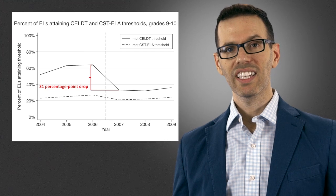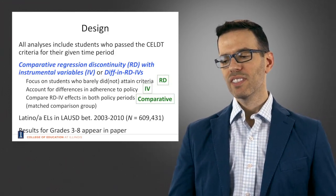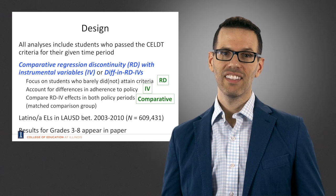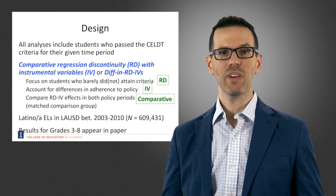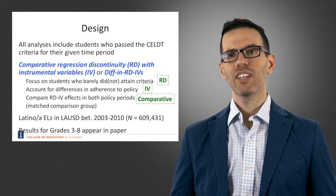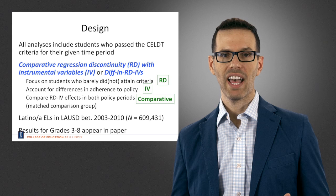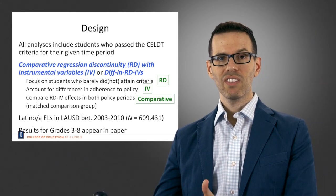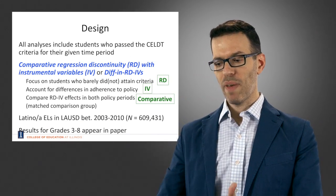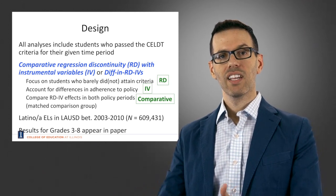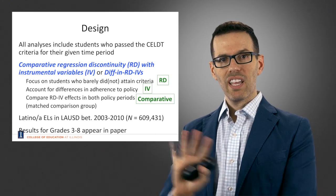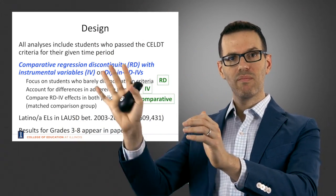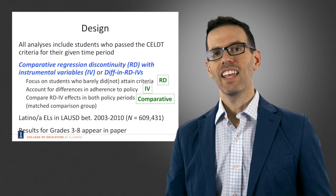So they did make the test harder. Now we want to see whether making the test harder had an effect on subsequent outcomes such as academic performance and graduation likelihood. To study that, we will limit all analyses to include only students who passed the CELT criteria for their given time period. In the pre-2007 period, this includes many students who met a lower CELT threshold. In the post-2007 period, a higher CELT level is required, so students will have higher English language proficiency.